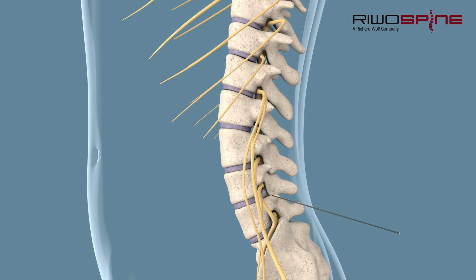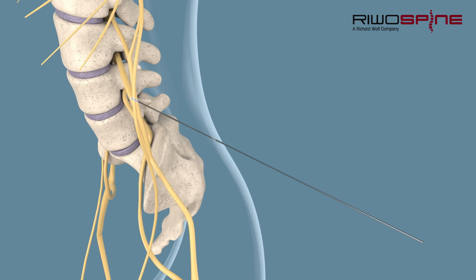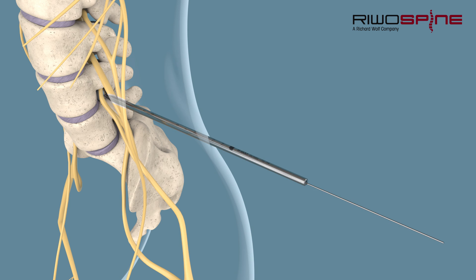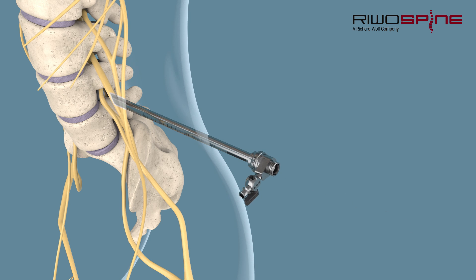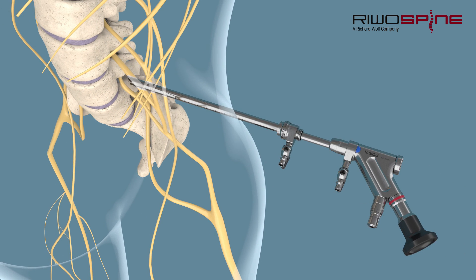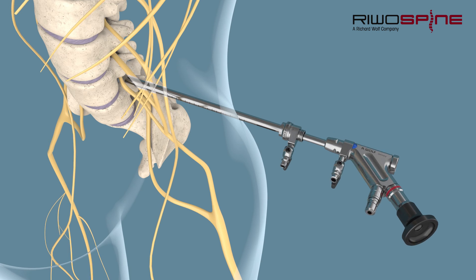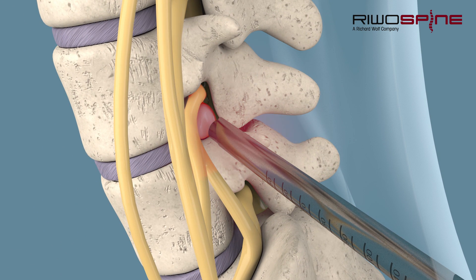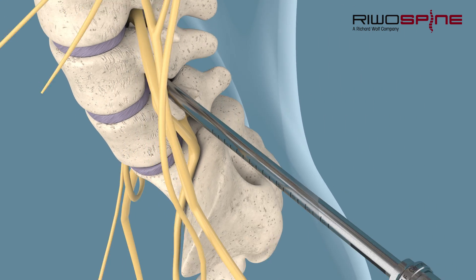First, a guide wire is used to ensure the correct positioning of the instruments. Thanks to special instruments and devices such as the dilator and working sleeve, this procedure offers the most minimally invasive approach compared with conventional methods. An essential component is the endoscope, which guarantees optical control of the treatment at all times. This allows the procedure to be performed safely and least invasively. The herniated intervertebral disc tissue is carefully extracted with the help of forceps to perform a decompression of the nerve structures.